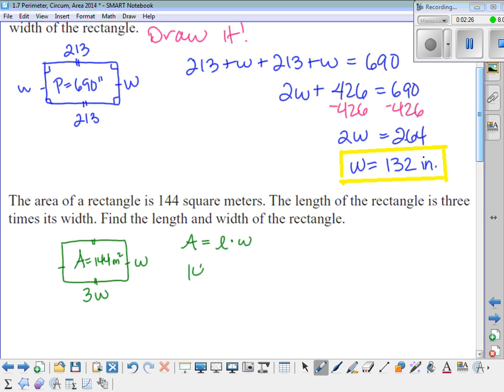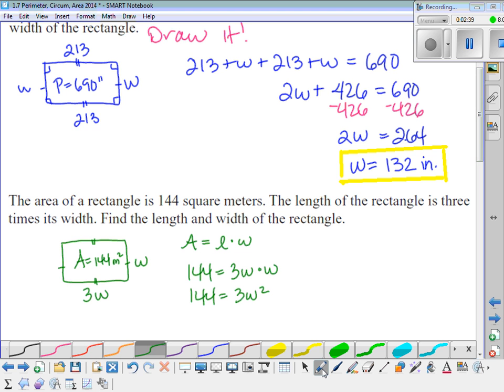And so the area of a rectangle is found by doing length times width. So we're going to plug in what we know and solve for what we don't know. So the area, 144, is equal to the length, 3W, times the width, W. And 3W times W is just 3W squared.